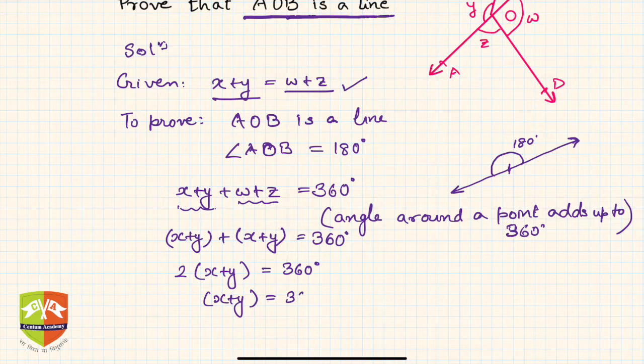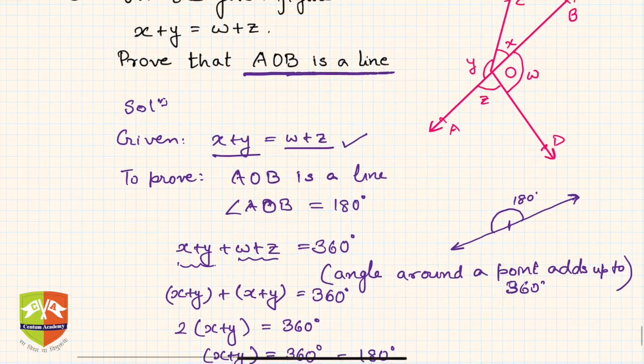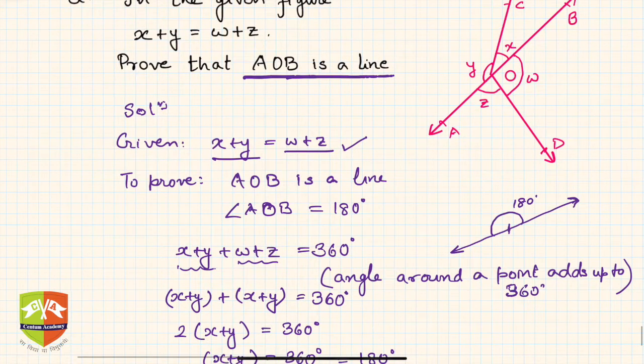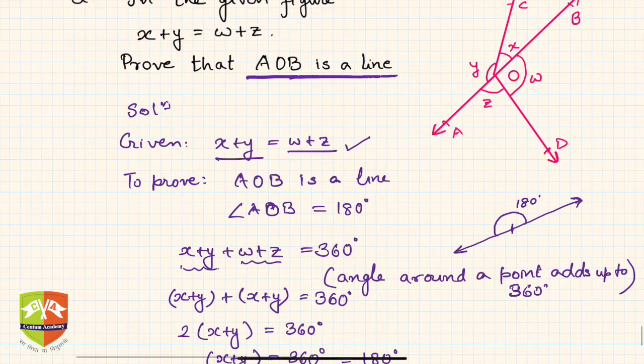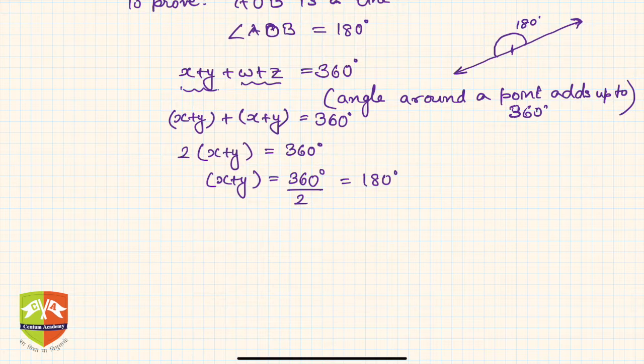So hence, what is x and y, my friends? If you see, x plus y is nothing but angle AOB. So hence, I can write angle AOB equals 180 degrees.